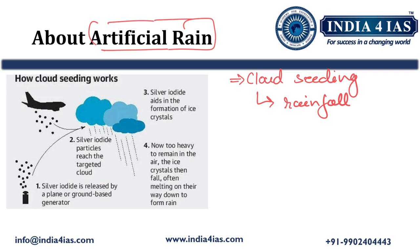Here we have a schematic representation of the artificial rain. The first step involves silver iodide, used as the cloud seeding material. It is released by a plane or a ground-based generator. These silver iodide particles reach the targeted cloud and aid in the formation of ice crystals. The ice crystals enlarge in size, become too heavy to stay at the upper layers of the atmosphere, and then fall to the ground as rainfall.